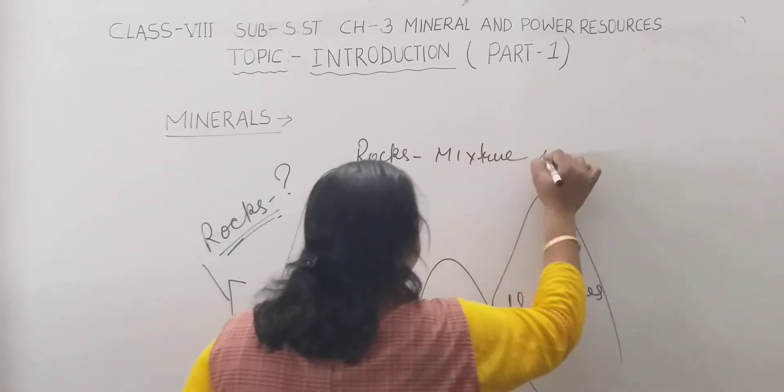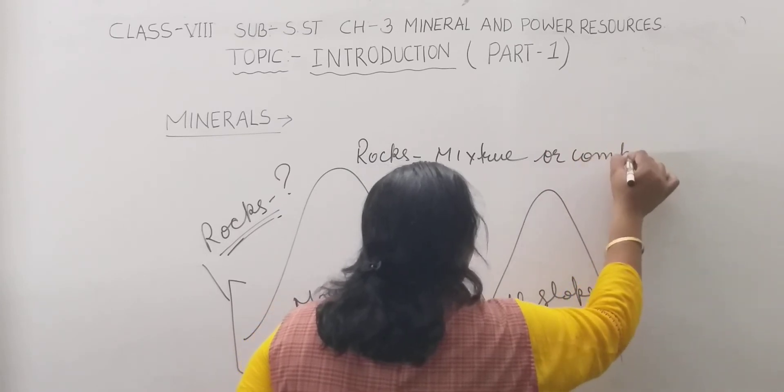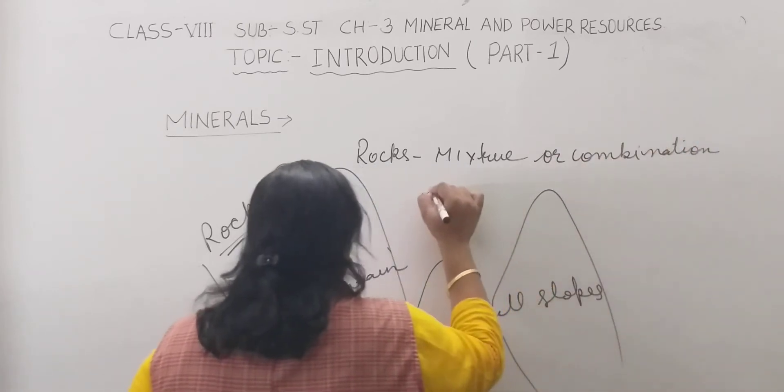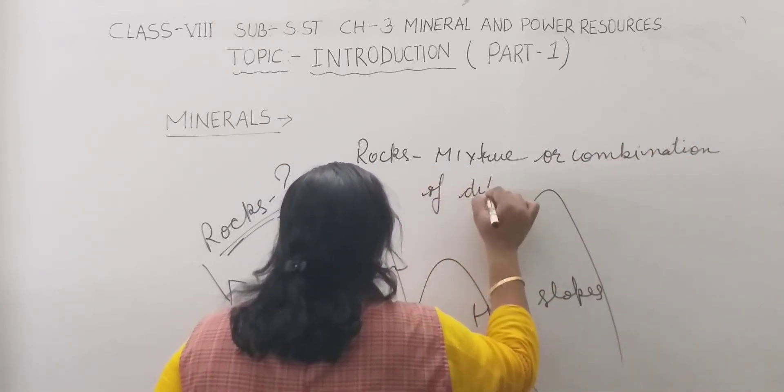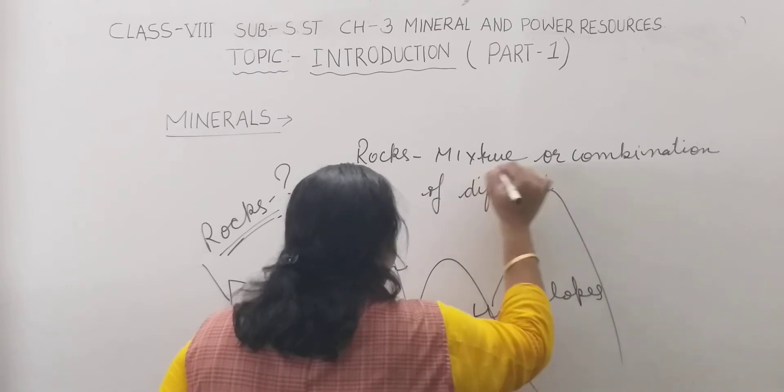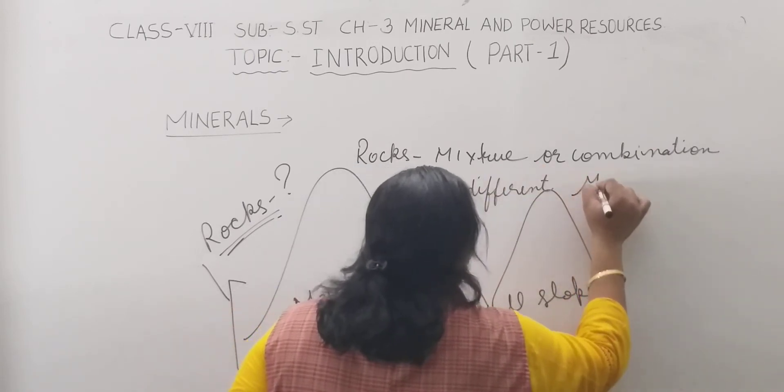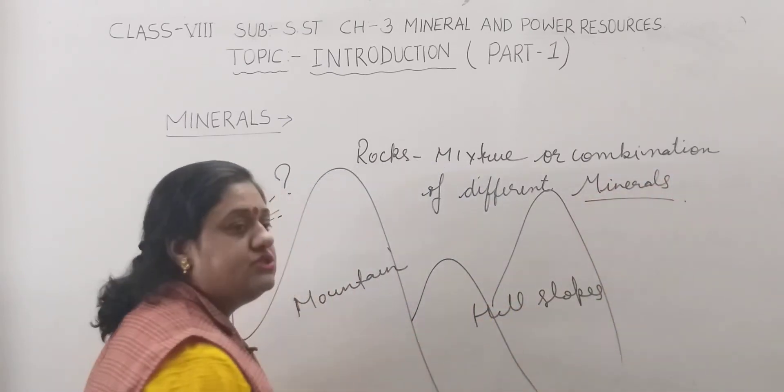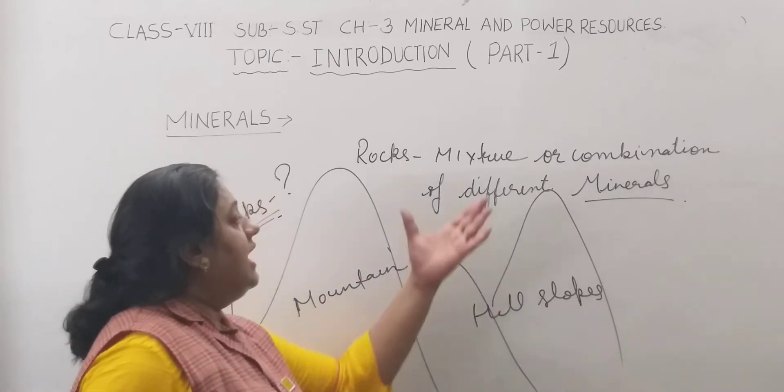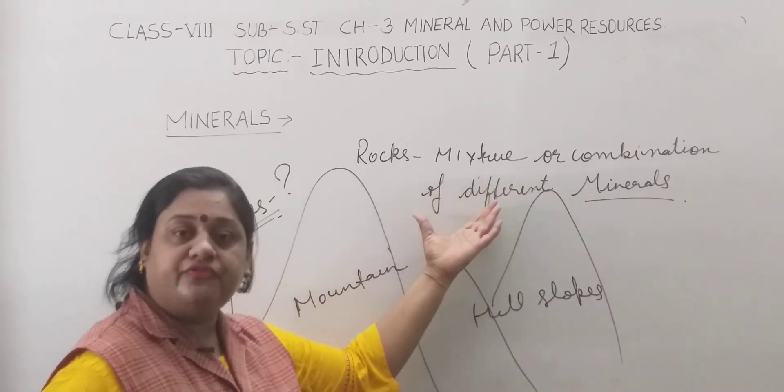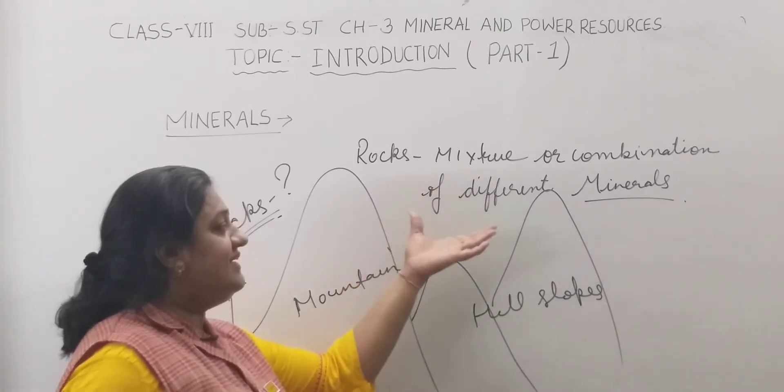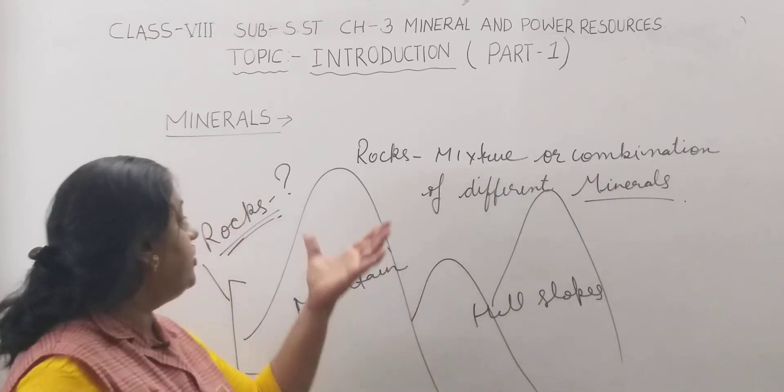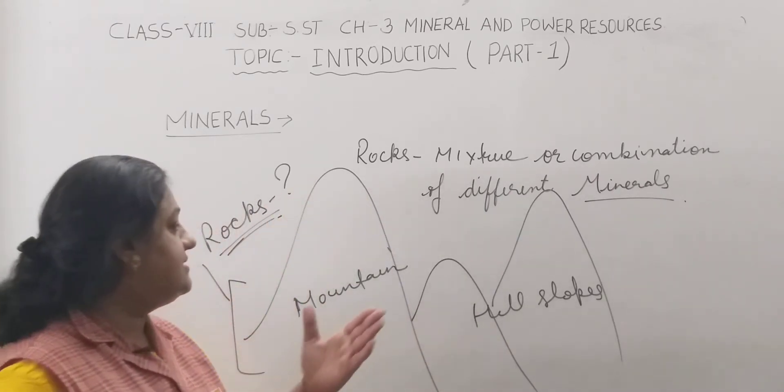Rocks, we can say, are a mixture or combination. Be concentrated on what I am writing on the board: combination of different minerals. So children, rocks are the combination, the mixture of different minerals. These are minerals. When different minerals combine, it forms rocks. When different rocks combine, it forms mountains and hill slopes.